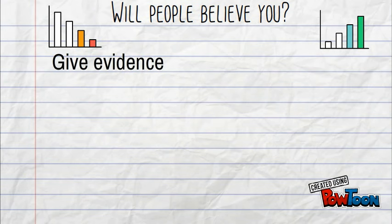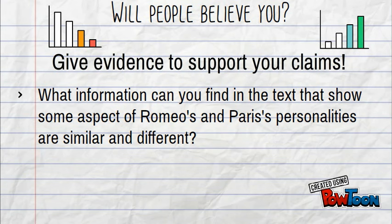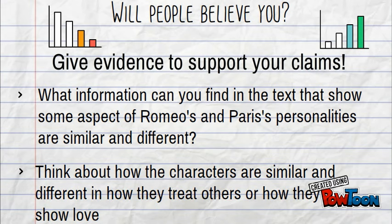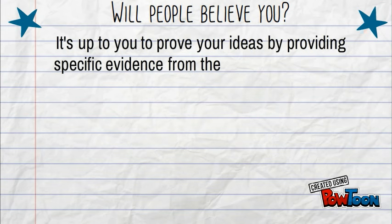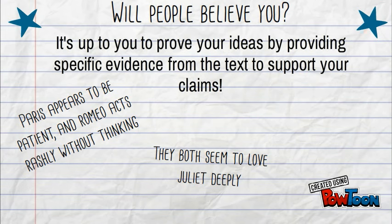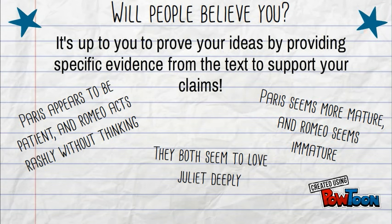Make sure to give evidence to support your claims. Ask yourself what information you can find in the text that shows how aspects of Romeo's and Paris's personalities are similar and different. For example, you can think about how they are similar and different in how they treat others, or how they show love. You can also look at how the characters act. It is up to you to find evidence from the text to support your claims. Look at the brainstorm ideas below and notice the different ways you can prove Paris and Romeo are similar and different in the text.